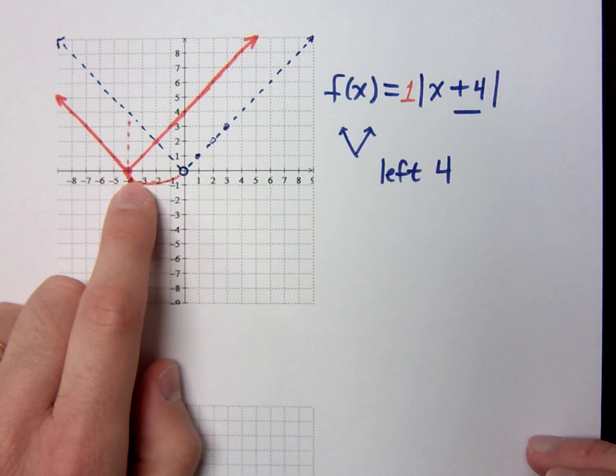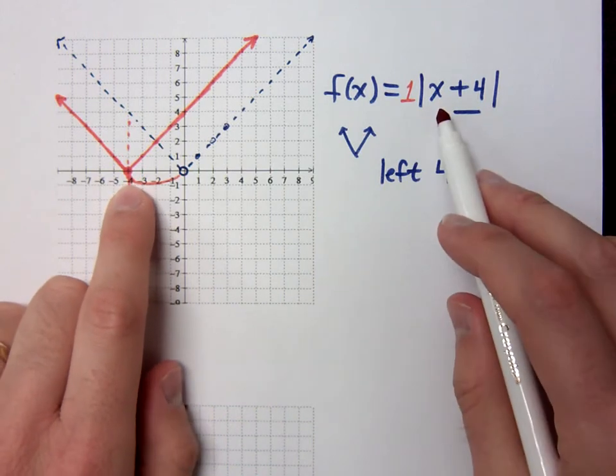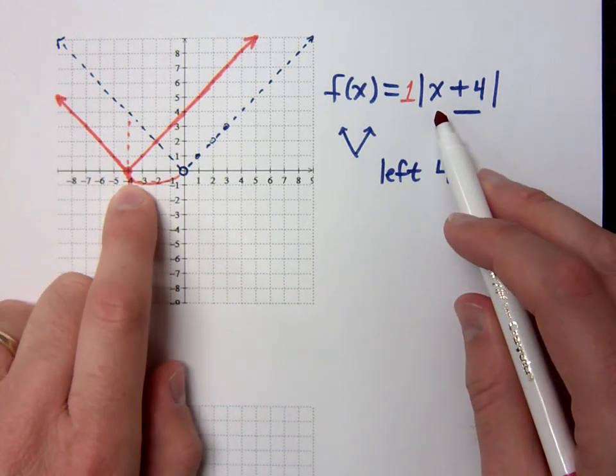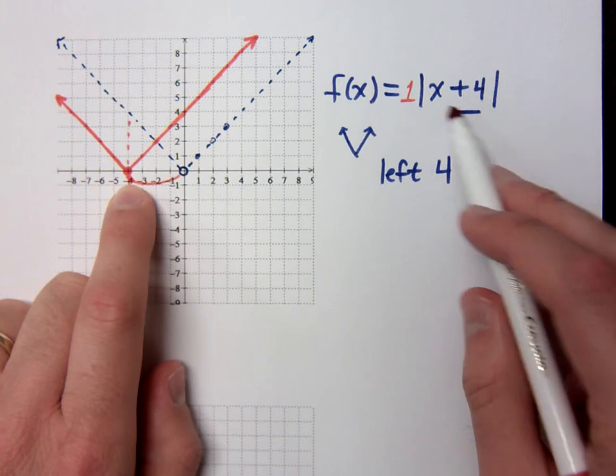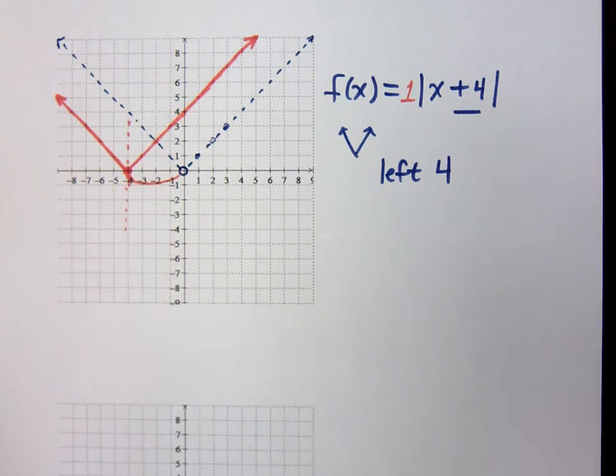And if you're not sure about it, is this the right thing? If I plug in negative 4, well, I'm just going to plug in negative 4 for x. I get 0, and what's the absolute value of 0? 0. So there's my fantastic picture. Is that okay?